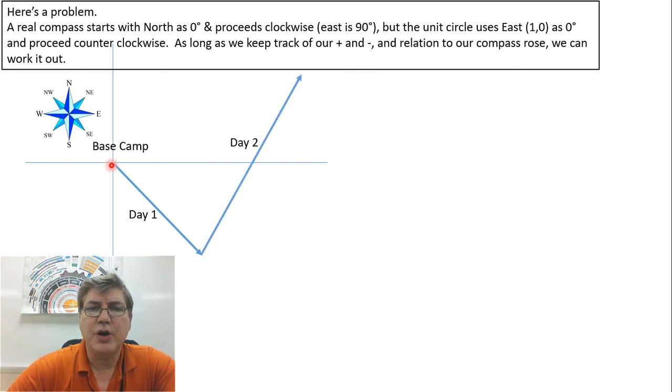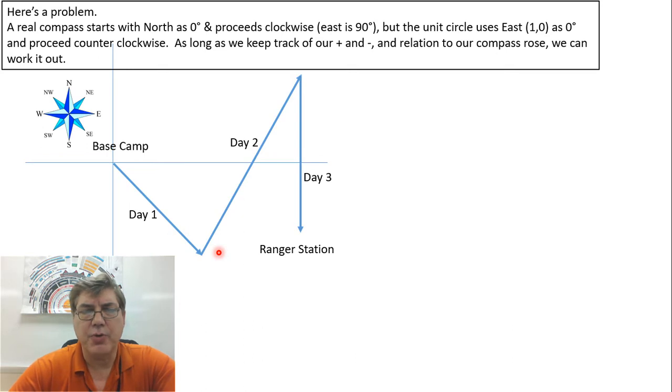Day two, she goes 60 degrees north of east, so we're going to look at as if this was the x and y axis right here. This angle between this and due east, we'll call that 60 degrees. And then on day three, she walks due south for 30 kilometers. That's where she finds the ranger station. And we want to find this resultant, the red line.